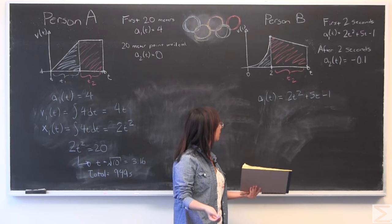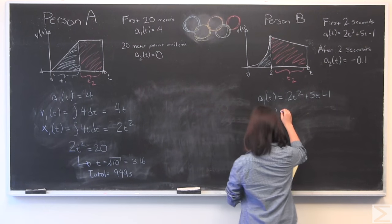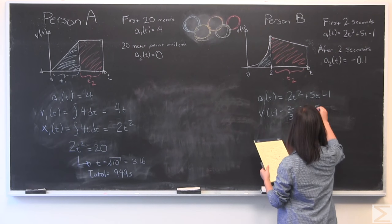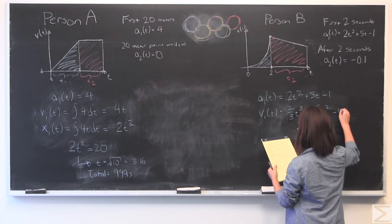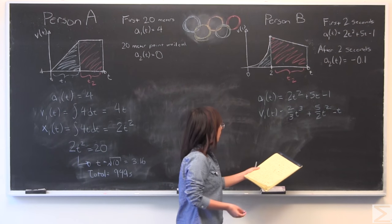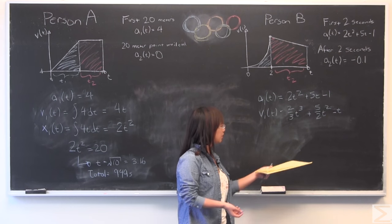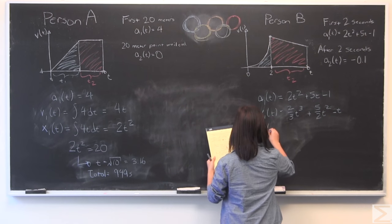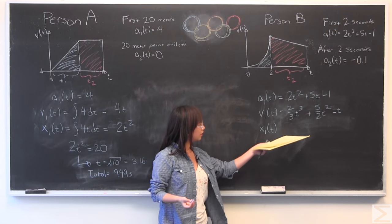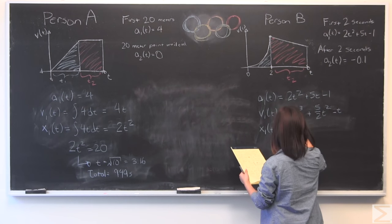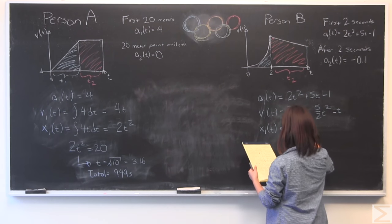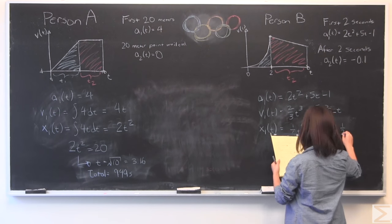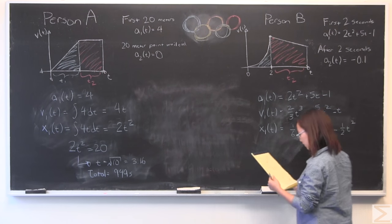I'm going to start by rewriting the acceleration function as before. And again, we use the same process. We're going to integrate. And this gives us the velocity. And like I said earlier, we're going to call c is equal to 0. No need to include it because it is 0 and we determined that for the same reason as it was before.